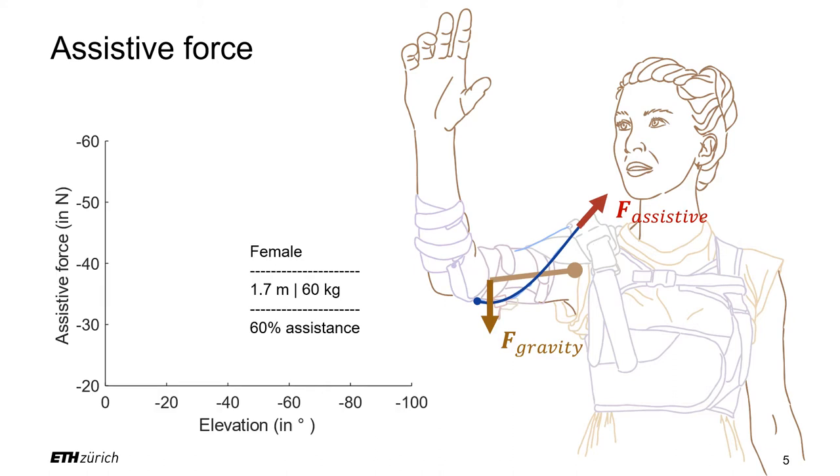For example, for a female user of 1.7 meters of height and 60 kilograms of weight and an assistance set to 60 percent, the maximum force at 90 degrees of arm elevation is 58 newtons.